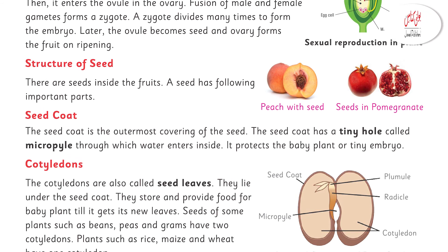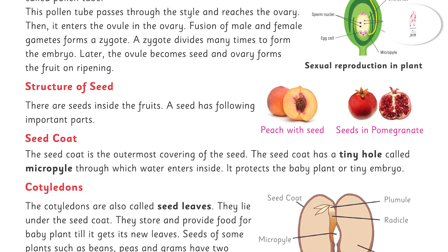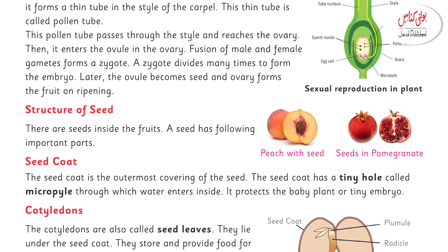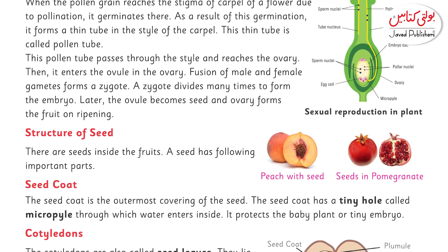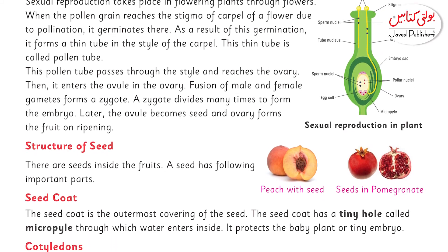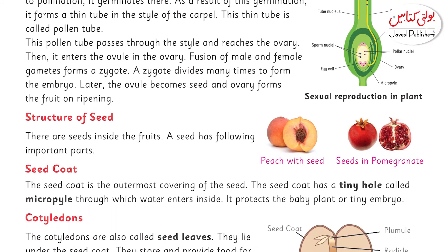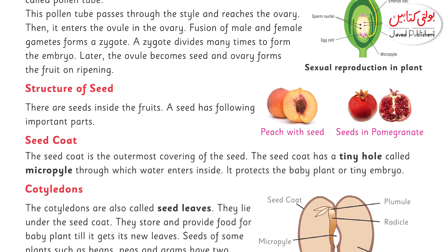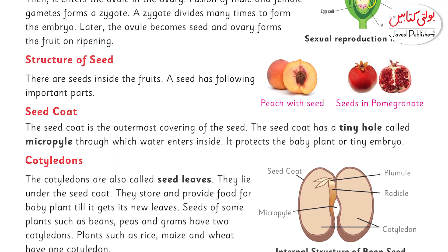It depends on whether it is a monocot plant or a dicot plant. If it is a monocot plant, it will have one cotyledon. If it is a dicot plant, it will have two cotyledons.